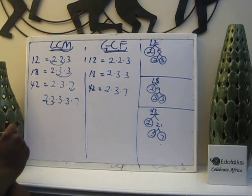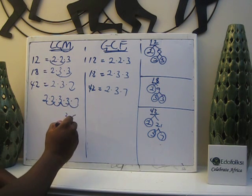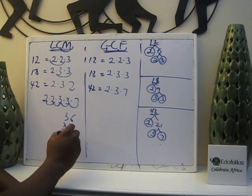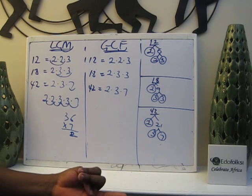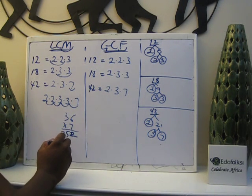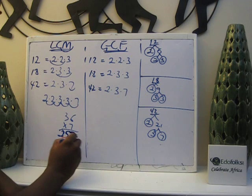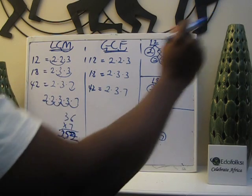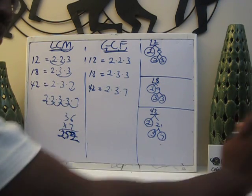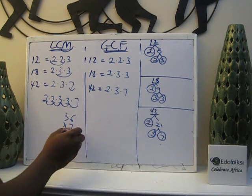2 times 2 is 4. 4 times 3 is 12. 12 times 3 is 36. 36 times 7: 7 times 6 is 42, carry the 4; 7 times 3 is 21, plus 4 is 25. So the lowest common multiple of 12, 18, and 42 is 252. That means 252 is the first number they all have in common.